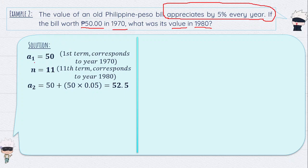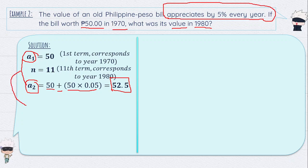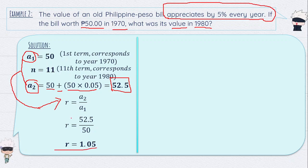To find a sub 2: starting from a sub 1 equals 50 pesos, we multiply by the appreciation rate. So 50 times 0.05 equals 2.5, then 50 plus 2.5 equals 52.5. Therefore a sub 2 equals 52.5. Using the common ratio formula: r equals a sub 2 divided by a sub 1, so r equals 52.5 divided by 50, giving a common ratio of 1.05.